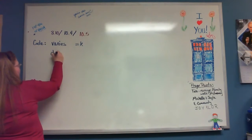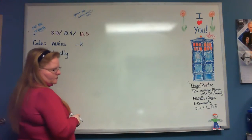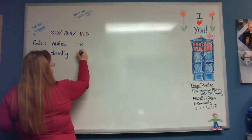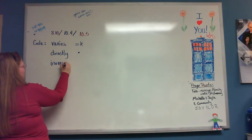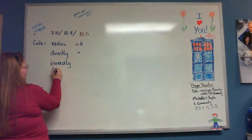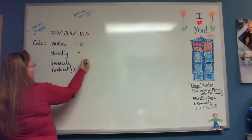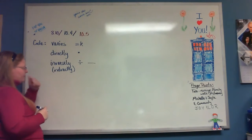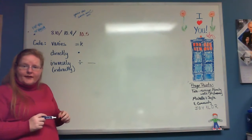Whenever we see the word 'directly,' that means times — just multiplication. Whenever we see the word 'inversely' or 'indirectly,' that means division, which you write as a fraction bar. Those are the only three things I need to introduce, and you are now able to do everything in sections 10.4 and 10.5.